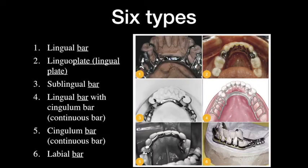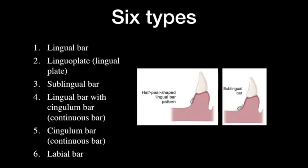For the mandible, we have six different types of Major Connector. One is a lingual bar, second is a lingual plate, third is a sublingual bar, fourth is a lingual bar with a cingulum bar also called a continuous bar, fifth is a single cingulum bar, and sixth is a labial bar. The difference between the lingual bar and the sublingual bar depends on location, which we will discuss later.